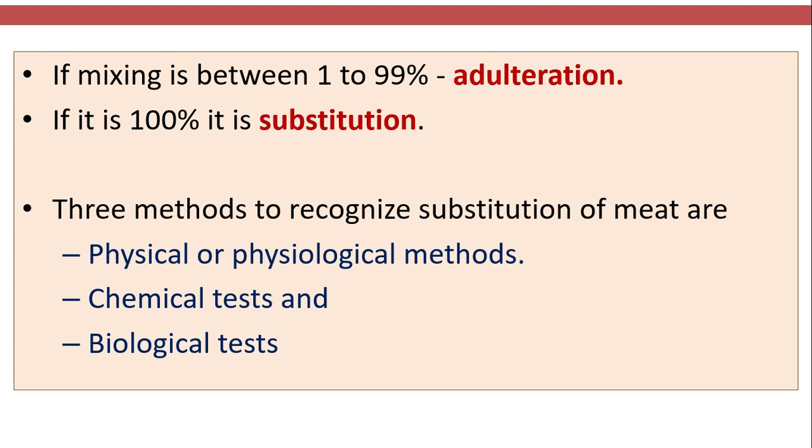There are three methods to recognize substitution of meat: physical or physiological methods, chemical tests, and biological tests.